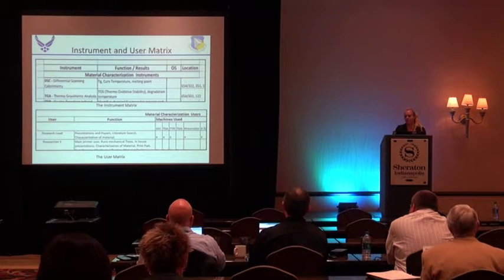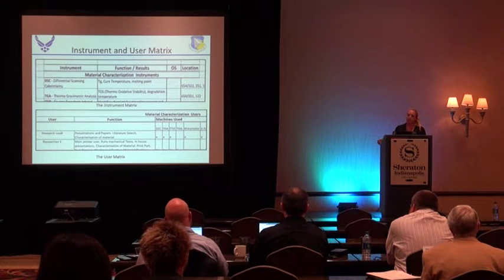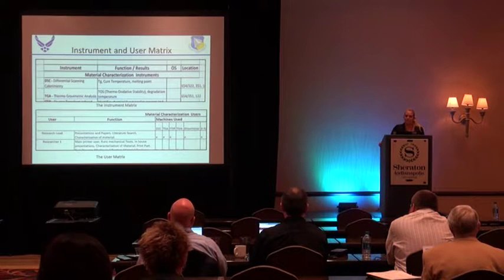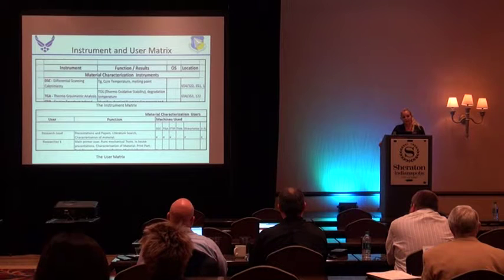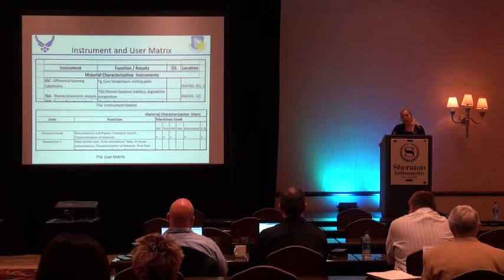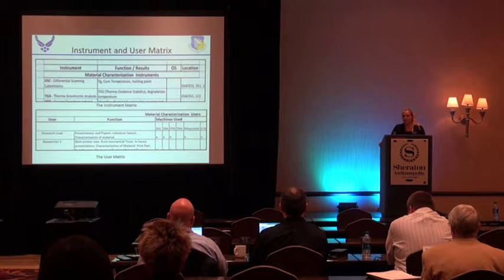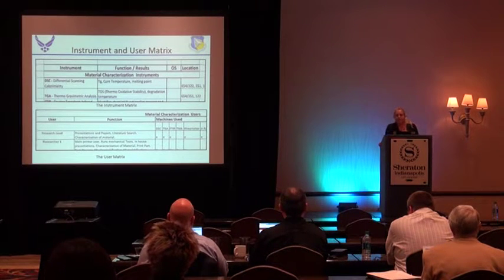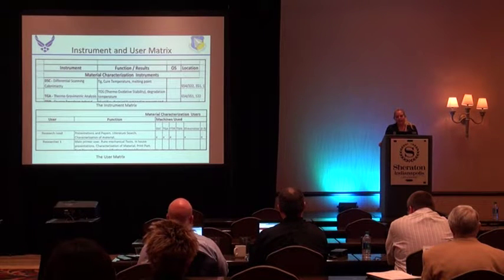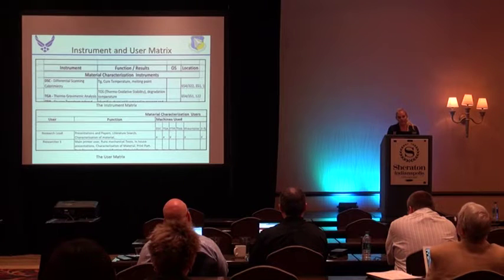Here's an example of our instrument matrix and our user matrix. Our instrument matrix includes the instrument name, function, operating system, and location. All this is important information to give the help desk so we can create useful help desk tickets and make sure we can easily integrate with them — we don't want to create something they won't be able to run on their PCs. The user matrix is also very important for the same reason: we want to make sure they have access to everything they need and can use all the machines they need.